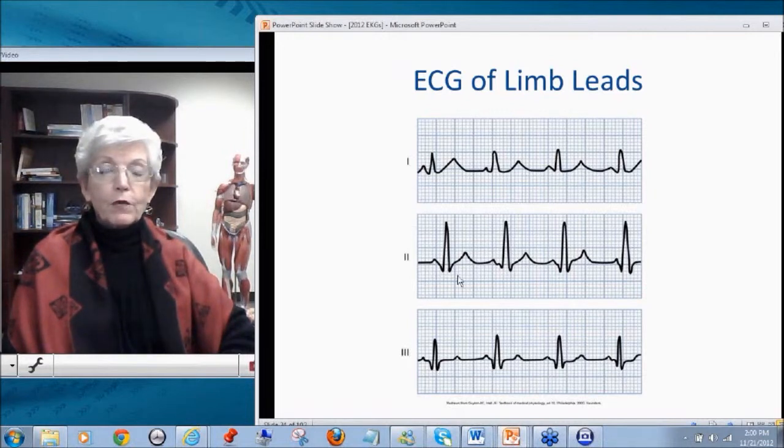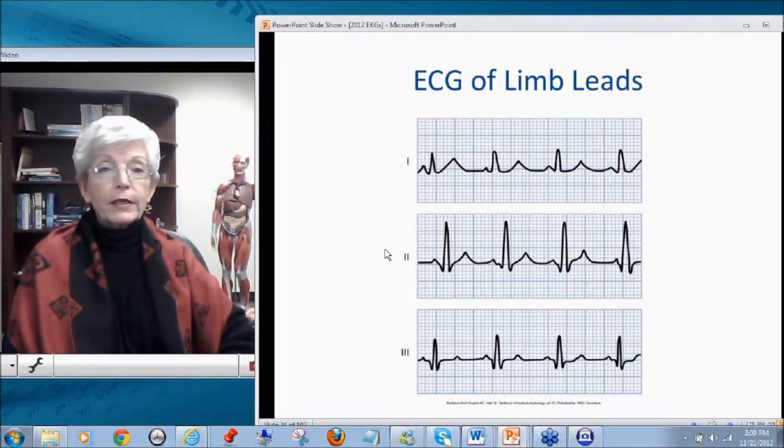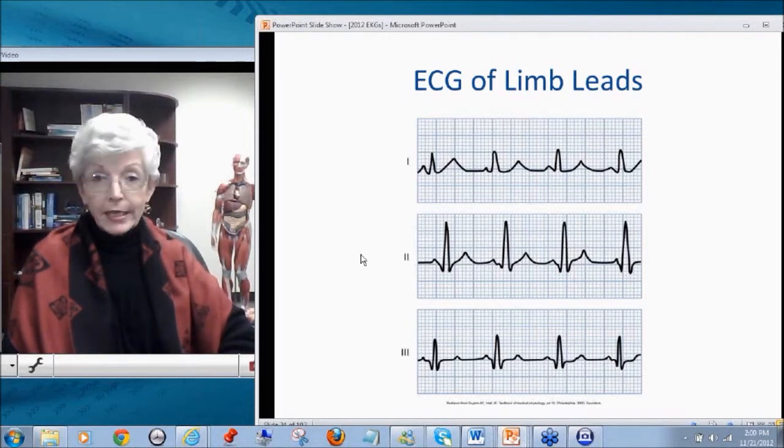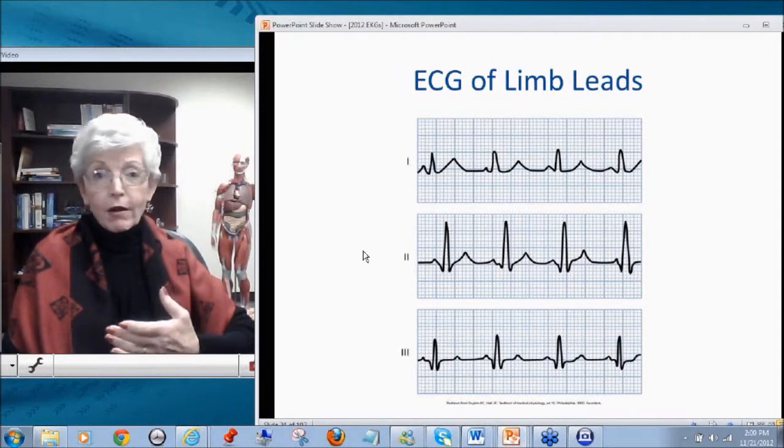And mathematically, if you remember your triangles, because this is Eindhoven's triangles, the sum of lead 1 plus lead 3 is equal to the height of lead 2. So lead 2, as a matter of fact, it's our most positive electrode or lead that we look at. And lots of people really enjoy monitoring a patient in a lead 2 because it's big, we can see it, and it's what we normally see when we're watching television programs like ER and things like that.